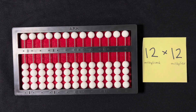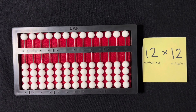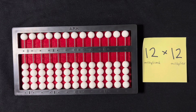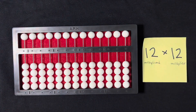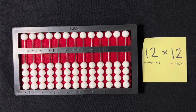Hi everyone. On one of my other multiplication videos, someone commented that they were having trouble with the problem 12 times 12, and so I'm going to show you how to do this using the counting method on the Cranmer abacus. Let's give this a try.